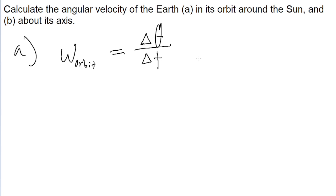So for the orbit, the Earth orbits around the Sun in one year. So it does a full rotation, a full orbit of 2π radians. So that's the angular displacement, and this is divided by the time interval of one year.